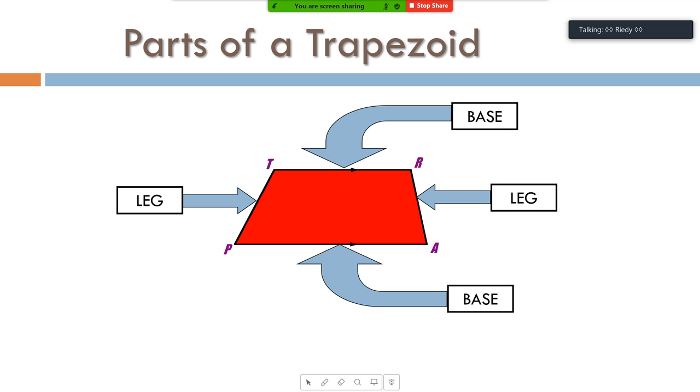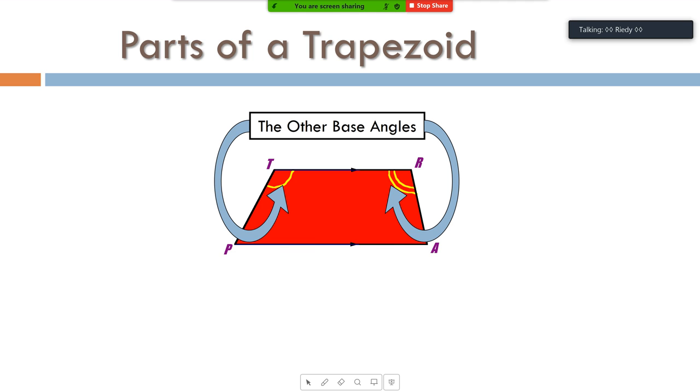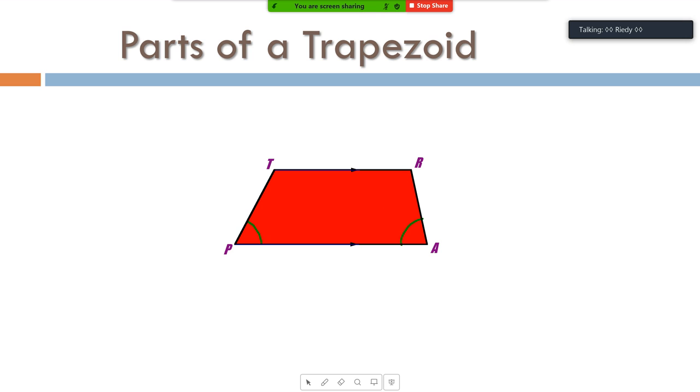We have two pairs of base angles. Now that seems confusing, but T and R are one pair of base angles because they're attached to the same base. T and A are the other pair of base angles because they're attached to the other base. Okay? There's one pair of base angles. There's the other pair of base angles. And I actually made a mistake. I'm going to go back a little bit. The mistake I made is I labeled angle P and angle A as being congruent. We don't know that they're congruent. In fact, they're probably not congruent. So it should be something like that. Different markings. They're just base angles. They're not congruent to each other.